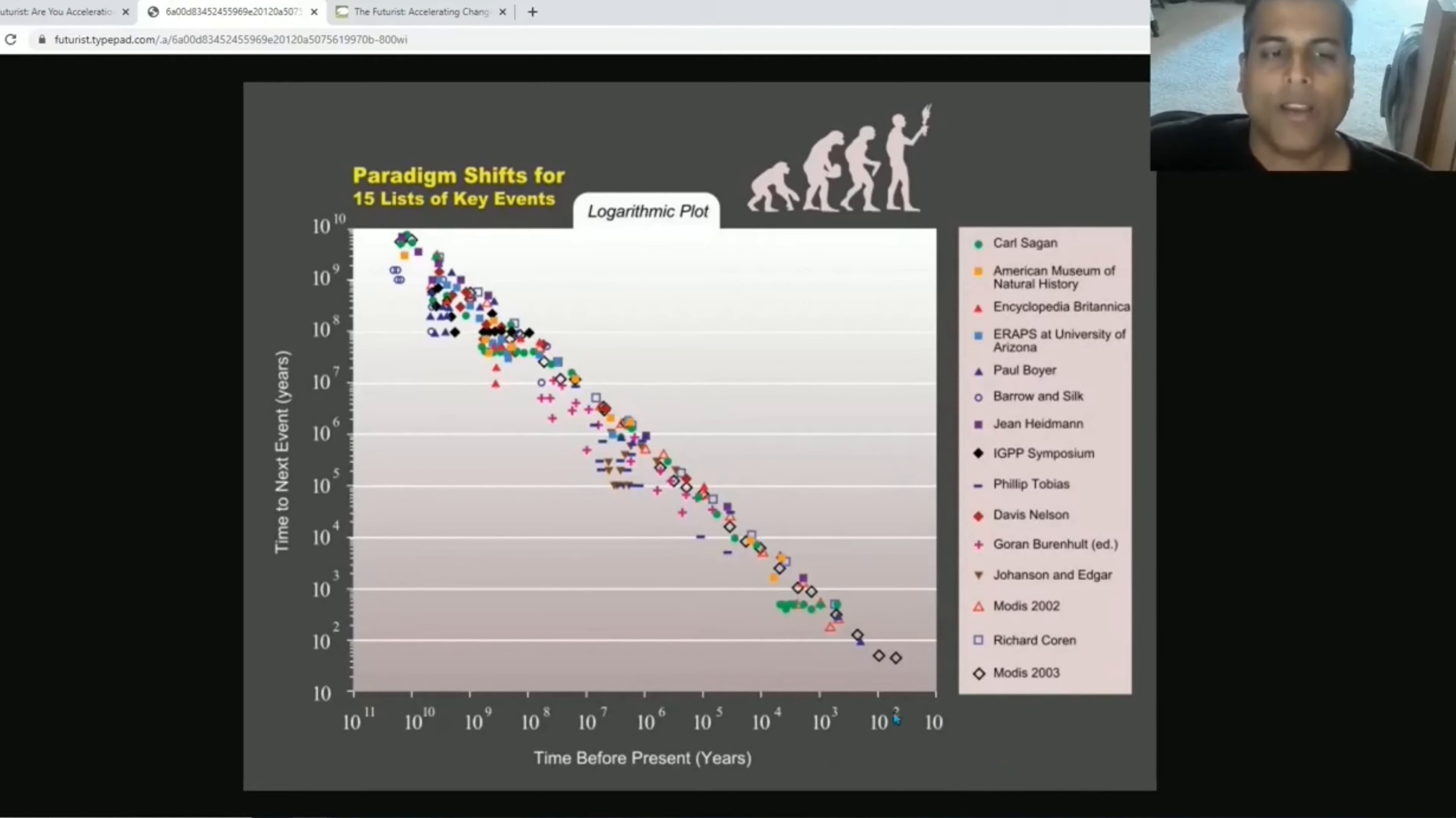The horizontal axis is time before present, years before present. This is most recent and going leftward is further back in time. The vertical axis is the time between each next significant event. He's taken these assessments of important events across all sorts of sources: astronomers, historians, encyclopedias, philosophers, and so forth. Without them influencing each other, all these various sources can put their assessment of what the most significant historical events were on a chart.